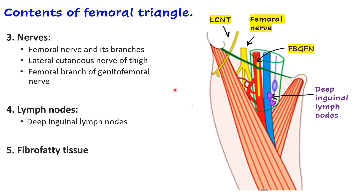To summarize the remaining contents: the three nerves from lateral to medial are the lateral cutaneous nerve of thigh, femoral nerve, and the femoral branch of the genitofemoral nerve. The fourth type of content is the deep inguinal lymph nodes, and finally, all around these structures there is fibro-fatty tissue.